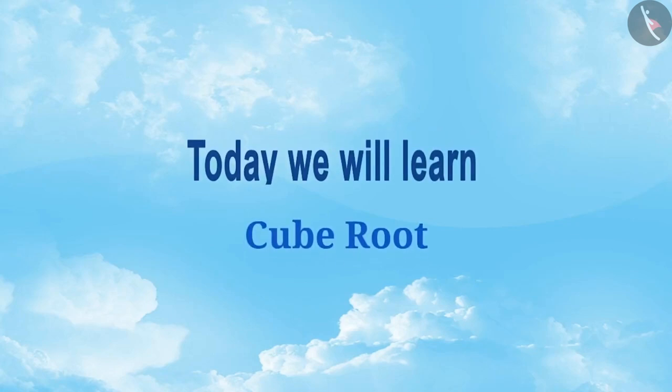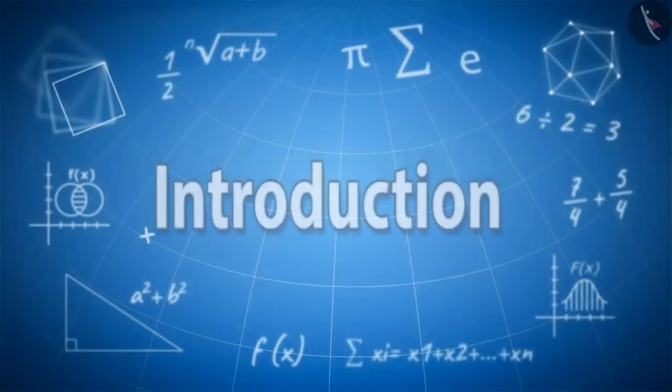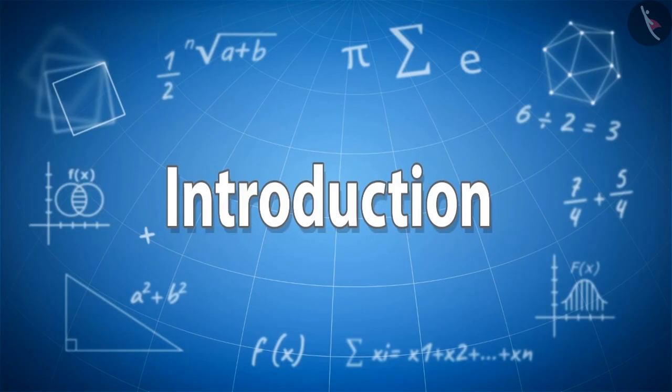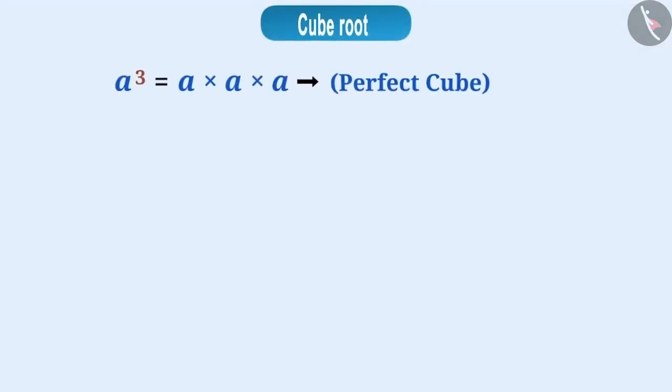Today we will learn cube roots. In the previous video, we learned that if a number a is multiplied by itself three times, we can express it as a cube of a and the number derived from it is called a perfect cube. Today we are going to talk about the opposite operation, that is cube root.